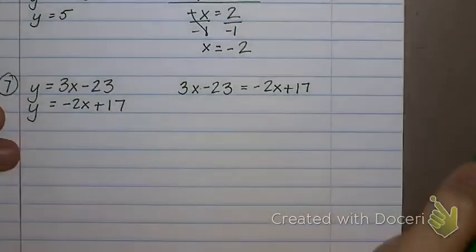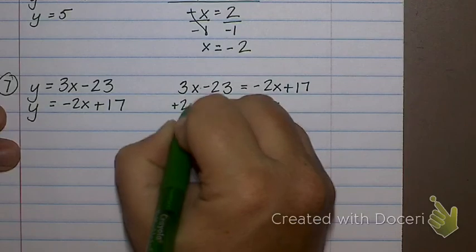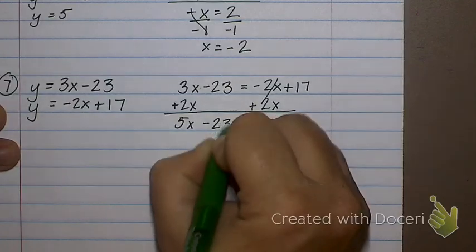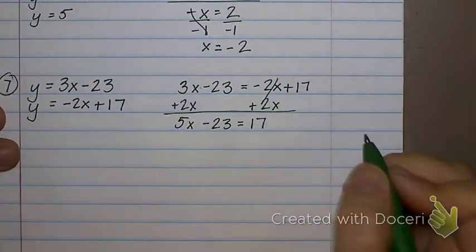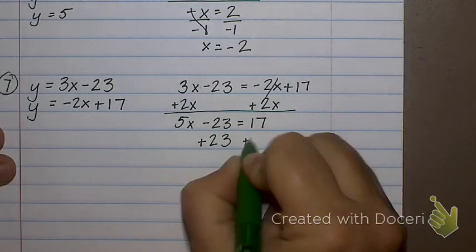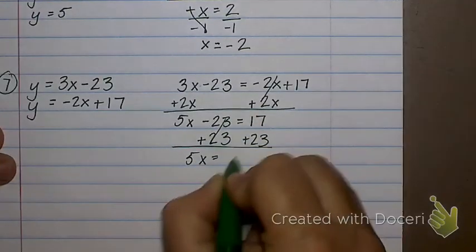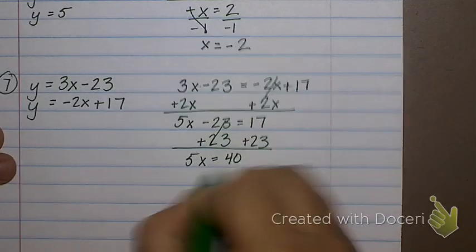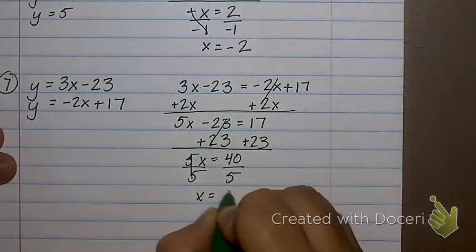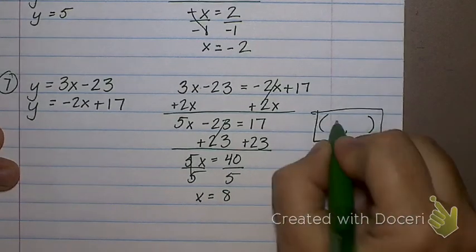So this one's that y equals and y equals thing, right? So I can say 3x minus 23 is equal to negative 2x plus 17. And what would I do to solve that? Add 2x to both sides. So 5x minus 23 is equal to 17. And then what would I do? Add 23. So 5x equals 40. Divide by 5 and x equals 8. So in my answer, the x value is 8.